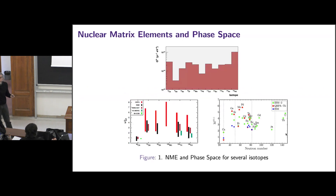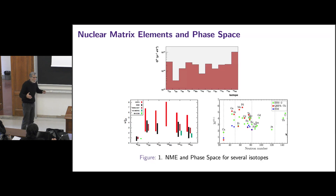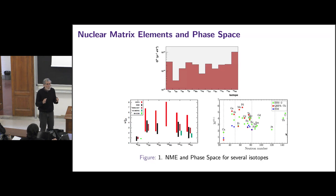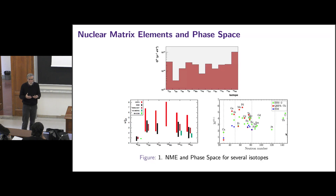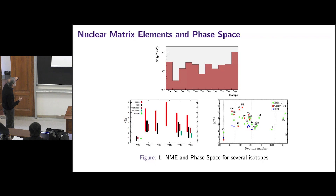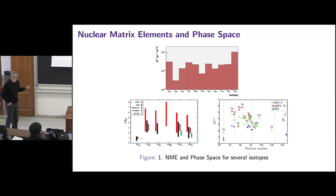Remember the formula: phase space, nuclear matrix elements, mass squared. Here you have phase space as a function of isotopes. There is a bunch of isotopes where you can do experiments, and an even shorter collection where you really can because the experimental conditions are favorable. This is in logarithmic scale, but phase space tends to be flat. Germanium has a little bit smaller phase space. The nuclear matrix elements are something you can compute — you just get your number and that's the end of the story.